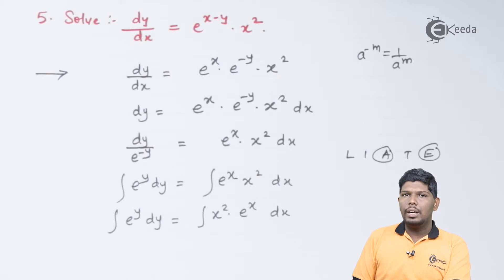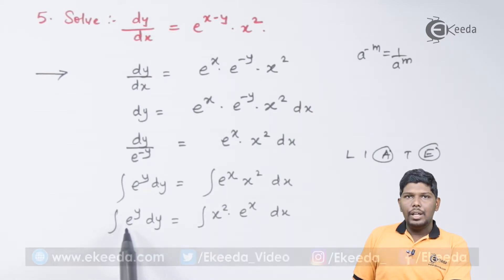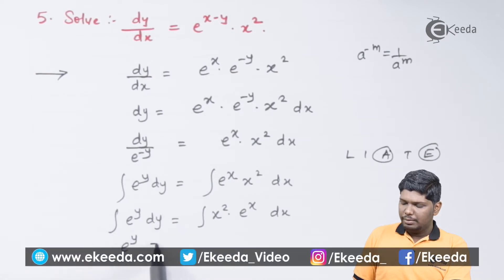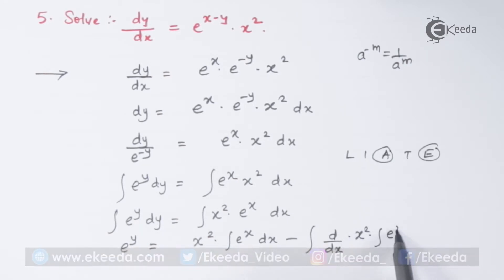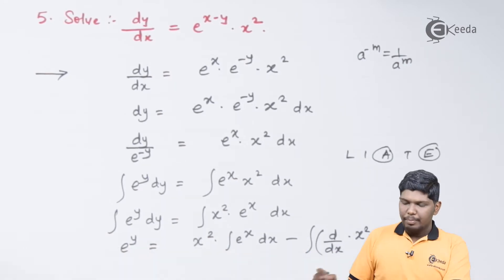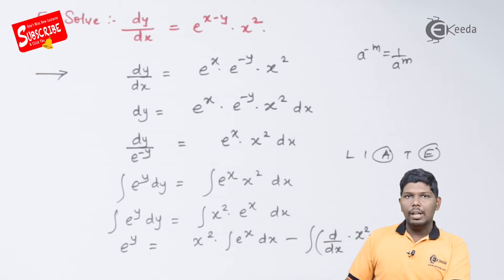we can expand this using integral uv which is equal to u integral v dx minus integral of d by dx of u into integral of v dx the over dx. Here, we have integral of e raised to x as e raised to x only and here the derivative of x squared will be 2x.